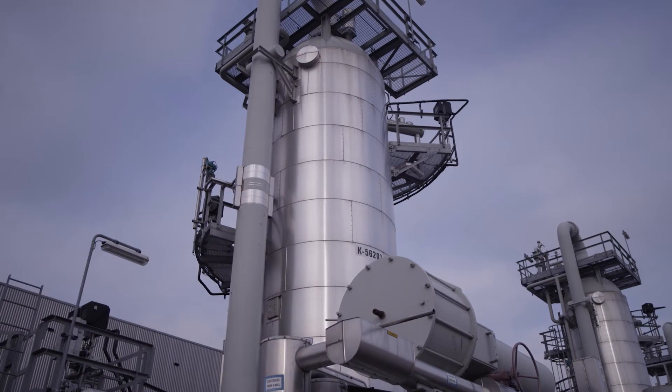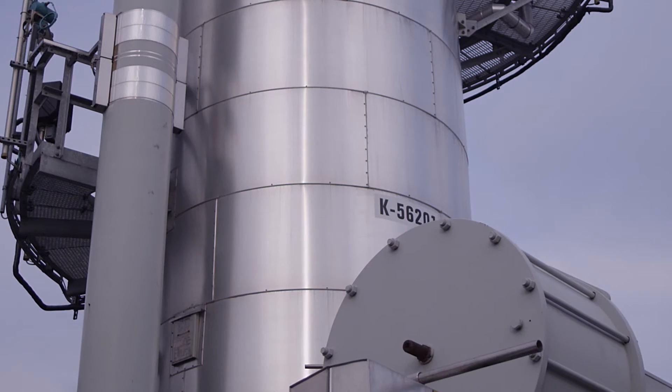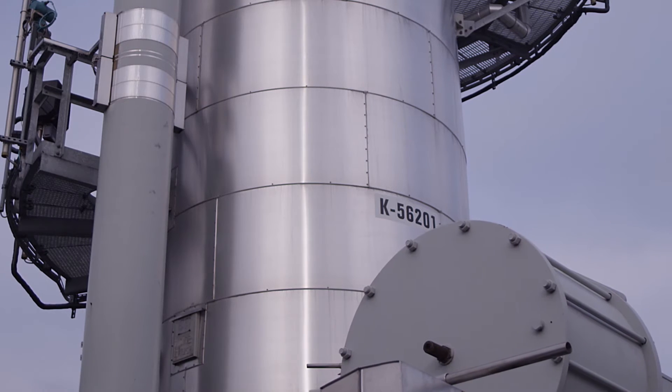In a tower known as a glycol contactor, the gas is thoroughly mixed with glycol to dry it out. The glycol is then separated from the moisture so that it can be reused.